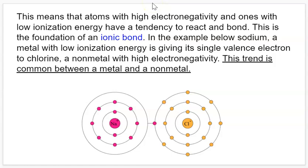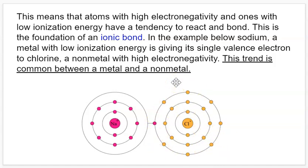This is the foundation of what we call an ionic bond. In the example below we have sodium, which is a metal with low ionization energy — it has one electron in its valence shell — and chlorine, which is a non-metal with high electronegativity, missing one electron in its outer shell. That means there's a tendency for the electron from sodium, represented by the pink dot, to be pulled away from sodium and join the outer shell of chlorine. This happens very often between metals and non-metals.